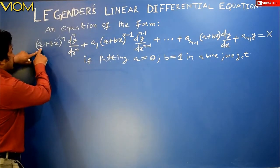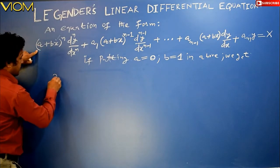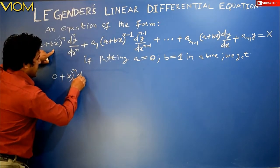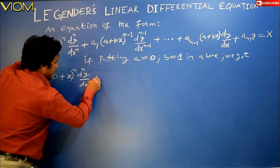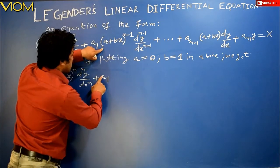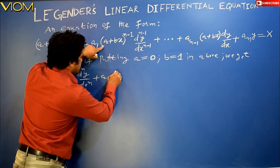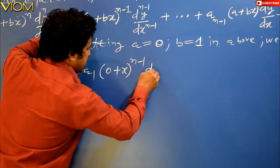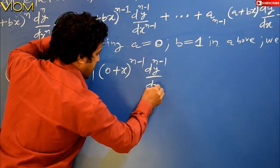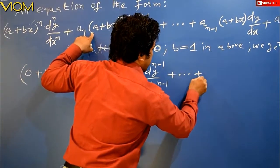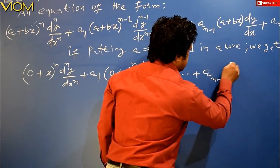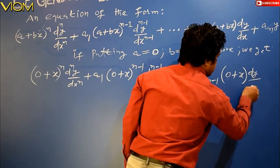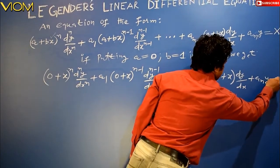Substituting a = 0, b = 1: (0 + 1·x)^n · (d^n y / dx^n) + a₁(0 + 1·x)^(n−1) · (d^(n−1)y / dx^(n−1)) + ... + a_(n−1)(0 + x) · (dy/dx) + aₙy = X. That is, x^n · (d^n y / dx^n) + a₁ x^(n−1) · (d^(n−1)y / dx^(n−1)) + ... + a_(n−1) x · (dy/dx) + aₙy = X.